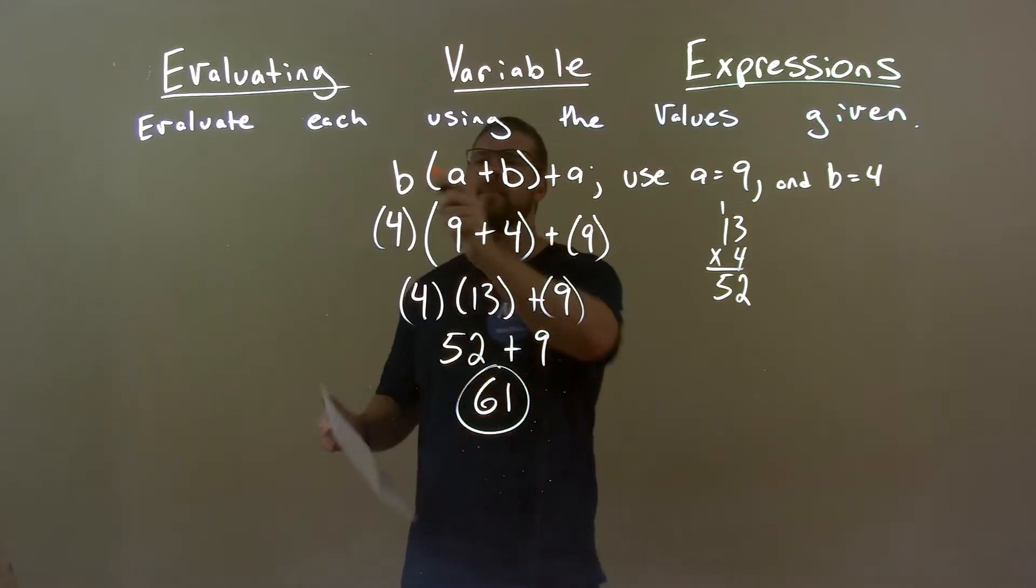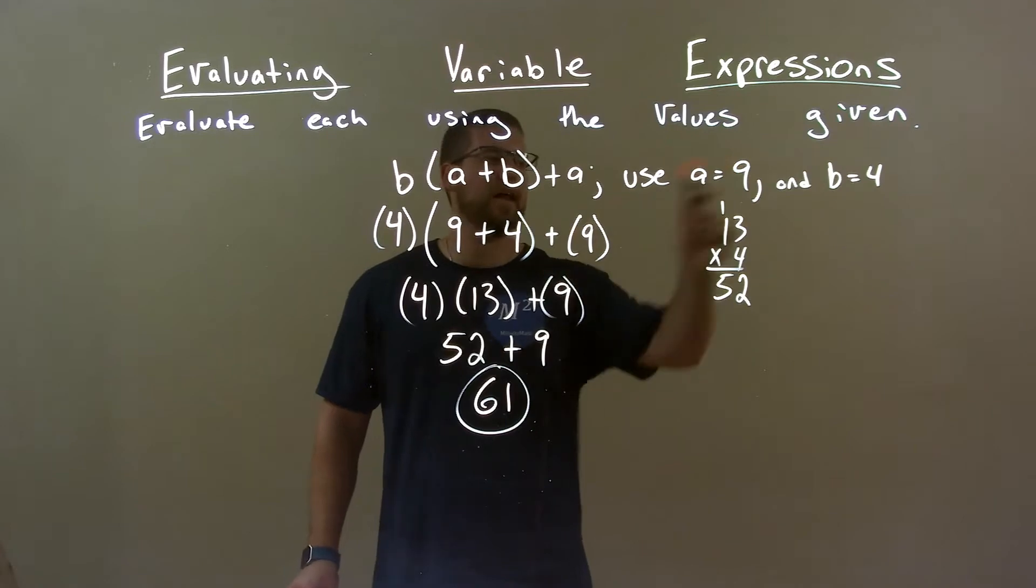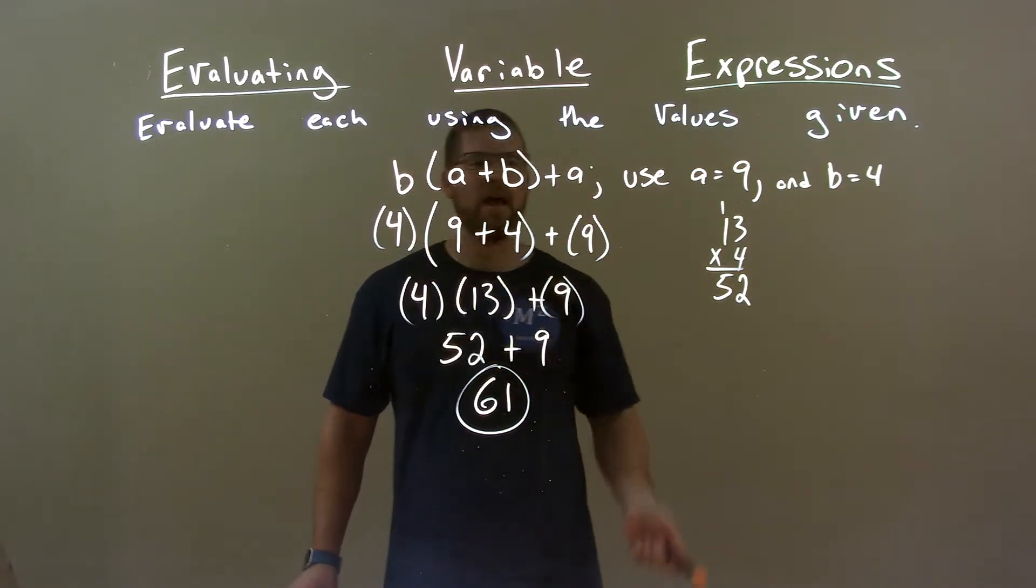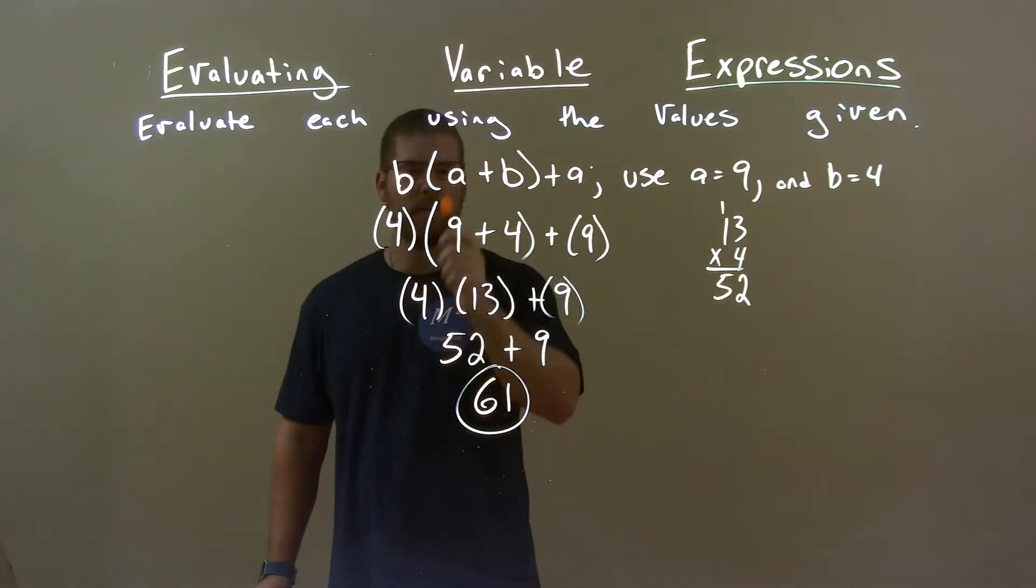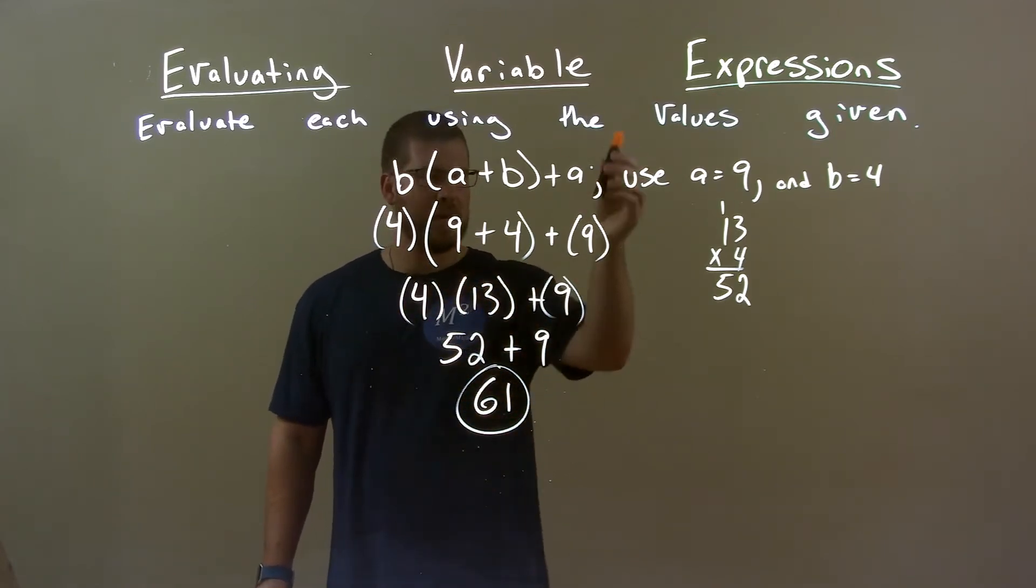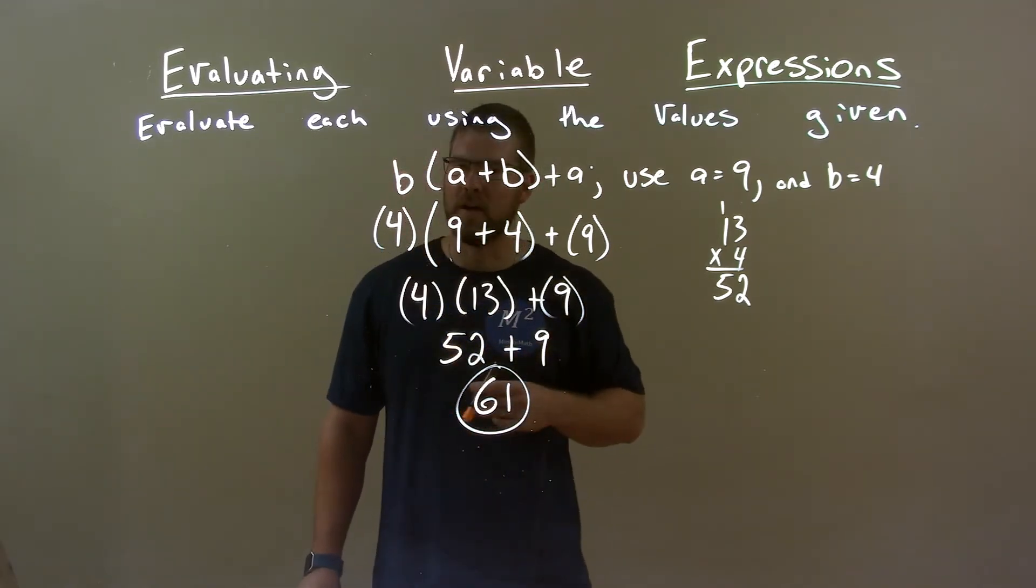Quick recap. We're given B times (A plus B) plus A, and A is 9 and B is 4. Substitute them in for B and A: 4 times (9 plus 4) plus 9. Parenthesis first: 9 plus 4 is 13. Then 4 times 13 was 52, bringing down the 9 the whole way. 52 plus 9 is 61, and so 61 is our final answer.